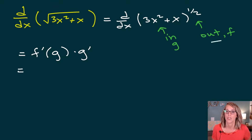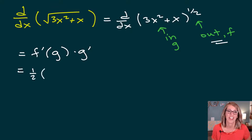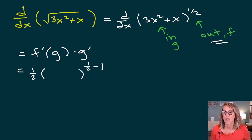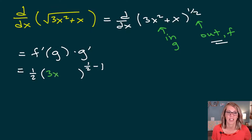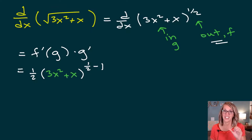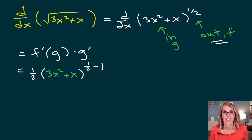I want to start with the outer function. It's a power rule, so the one-half comes down. I leave the inner function, then apply the power rule — I need to take that power and subtract one. My inner function was 3x squared plus x, so I leave it as is inside of that first derivative, and I'm going to multiply on the derivative of that inner function.